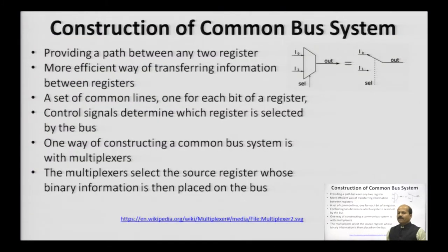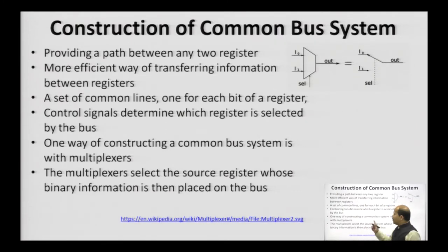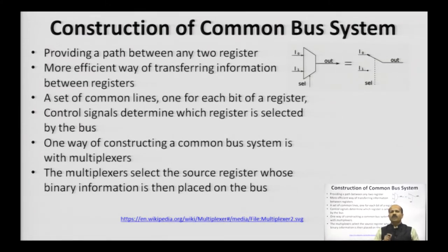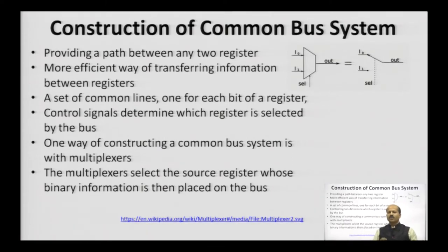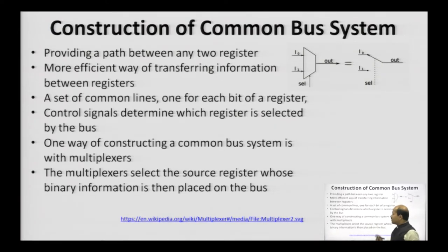Let us have a discussion of bus connecting registers or various components in the system. A bus basically provides a path between any two registers. It is the most efficient way to transfer data between any two given registers. It is a set of lines in terms of data transfer or control transfers. Various control signals are issued to select a particular register whenever register transfer is taking place. One way of constructing a common bus system is with a multiplexer. Using a multiplexer, we can select one out of a given set of registers.